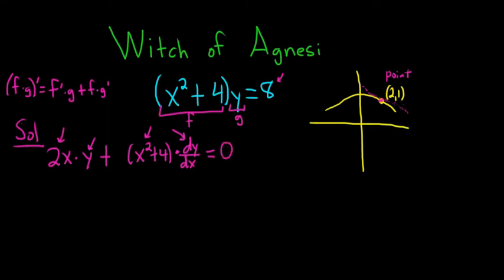So we want the slope at (2,1), so we could solve this for dy/dx but it's actually way easier if you go ahead and plug in the numbers now. So at (2,1) x is equal to 2 and y is equal to 1. So now we're going to plug these numbers into this equation and find dy/dx.